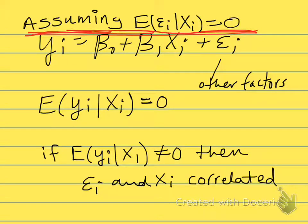Let's talk about the assumption that the expected value of the error term, conditional on the explanatory variables, is equal to zero. Our usual regression model is yi equals beta zero plus beta one times xi plus epsilon i.